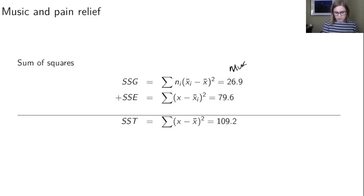So these are the examples from the music and pain relief example. The SSG was 26.9 and if you do 26.9 plus 79.6 you're gonna get the SST which is 109.2. So if you were in a scenario where you needed to compute some of these sums of squares, you could make it easier on yourself by just computing two of them and then doing the addition or subtraction to find the third one.